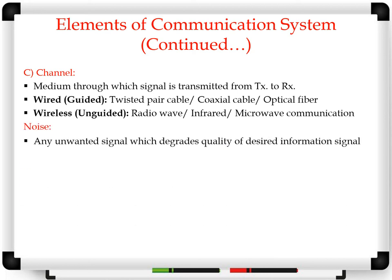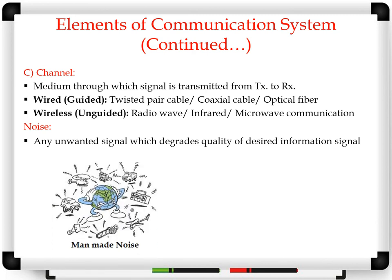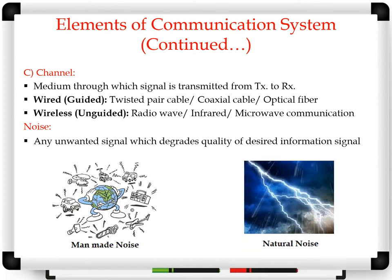Noise is any unwanted signal which degrades the quality of the desired information signal. The desired information signal is the original message signal that we transmit from transmitter to receiver. Noise can be either manmade or natural. Manmade noise is due to industrialization, transportation, and other human activities. Natural noise consists of natural sources like rain, storms, lightning, or extraterrestrial sources such as radiation from the sun or other stars.